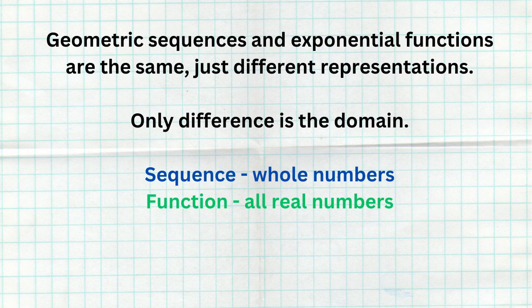It's important to understand that geometric sequences and exponential functions are the same thing — just different representations. Whether you say f(x) or g_sub_n, the key difference is that in a sequence you can only plug in positive whole numbers (1, 2, 3, 4, 5...), whereas in an exponential function you can plug in any real number. That's the only meaningful difference between the two.